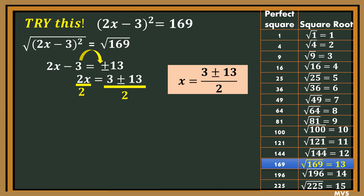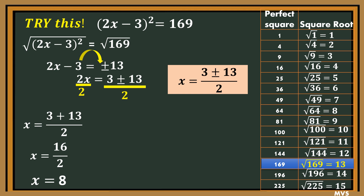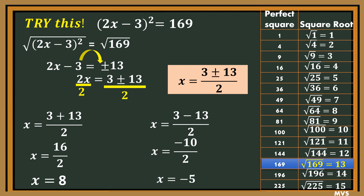Then, divide both sides by 2. So x is equal to (3 plus or minus 13) all over 2. Separating the equations: first, x equals (3 plus 13) all over 2, then x equals 16 over 2, so x is equal to 8. Second equation: x equals (3 minus 13) all over 2, then x equals negative 10 over 2. Therefore, x is equal to negative 5. So the roots are 8 and negative 5.